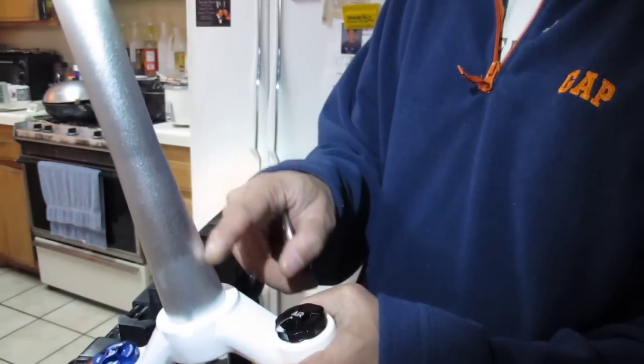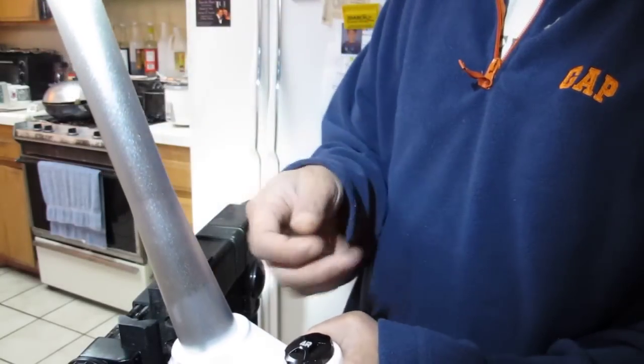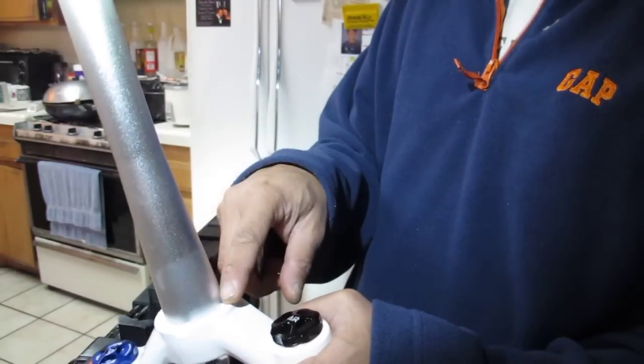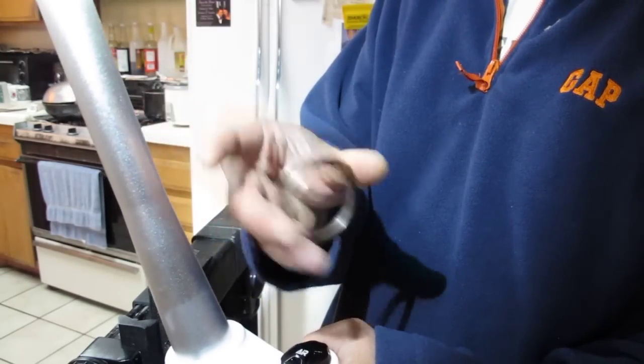Usually if you have a tapered fork, you want one for a one and a half inch. If you have a straight one and one eighth inch, make sure you get a crown race for one and one eighth inch steerer tube.